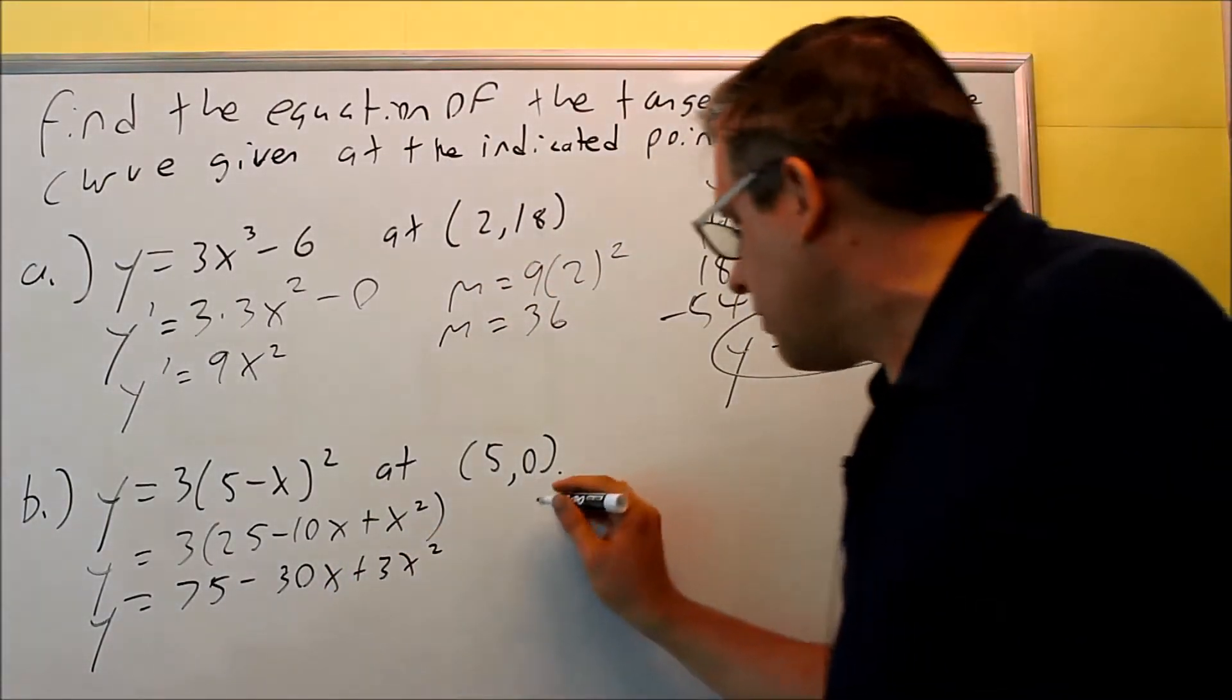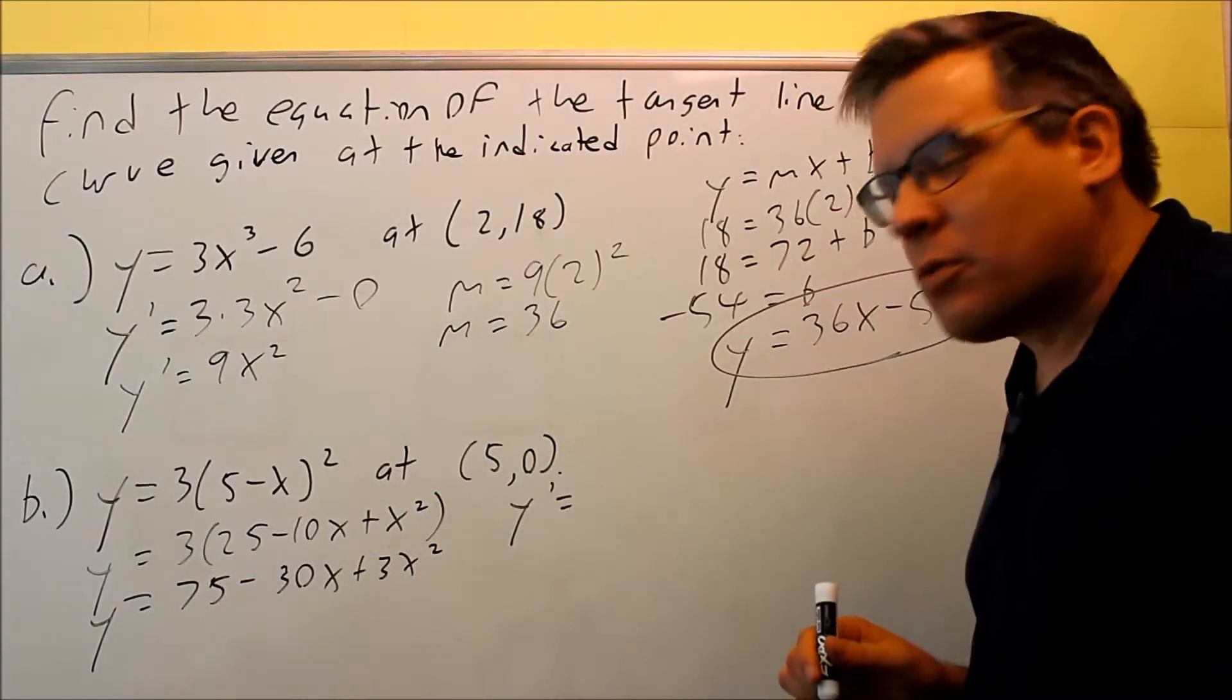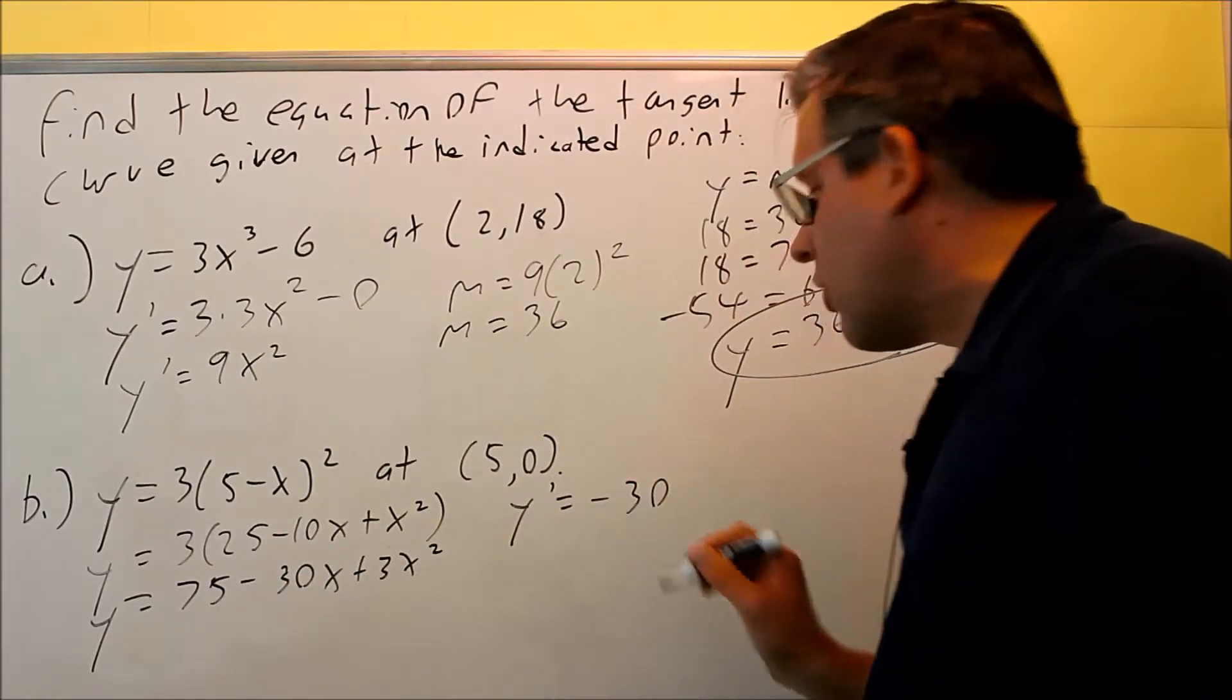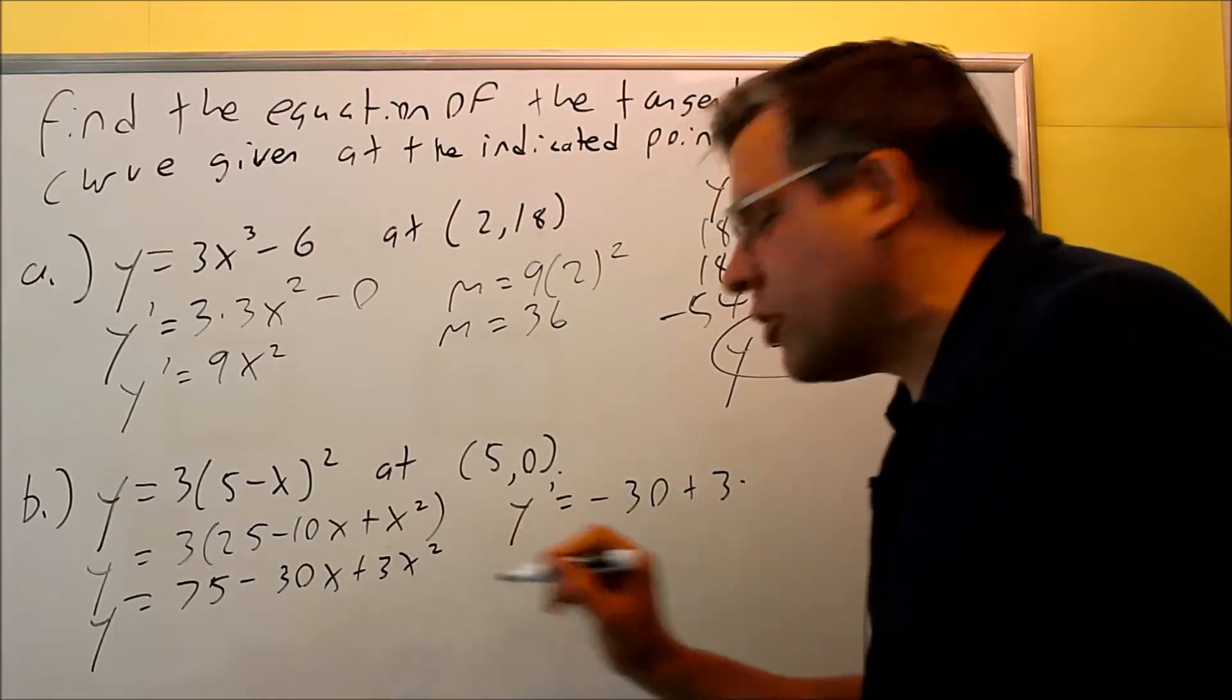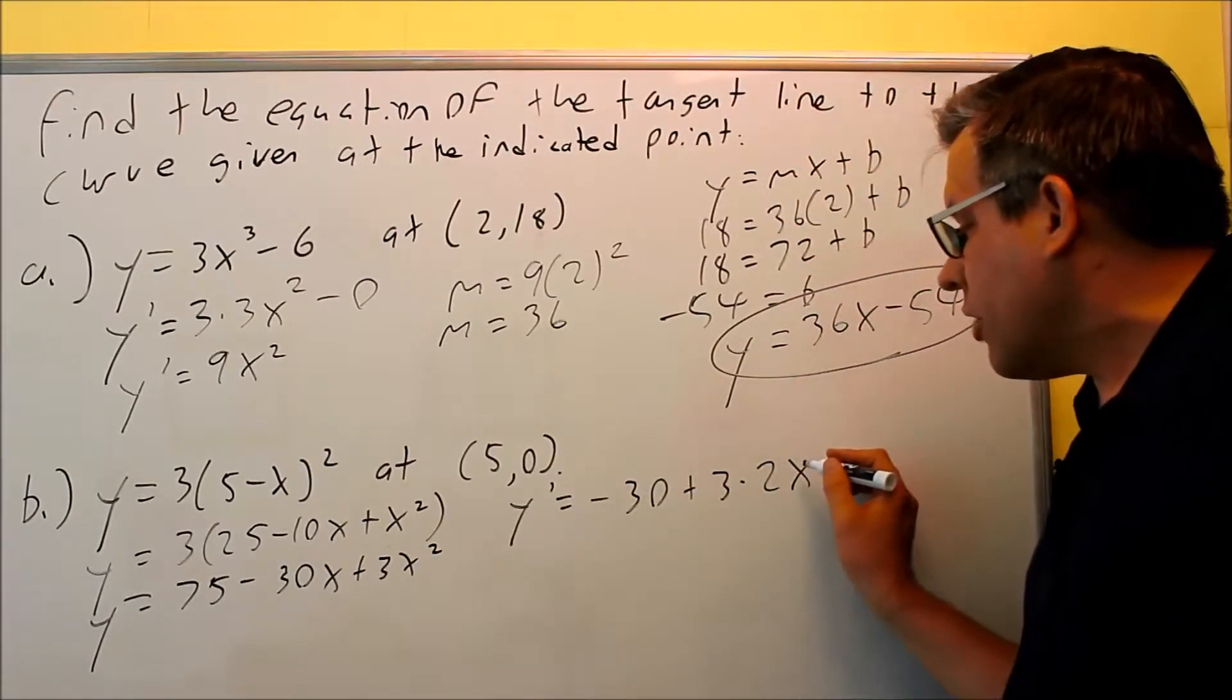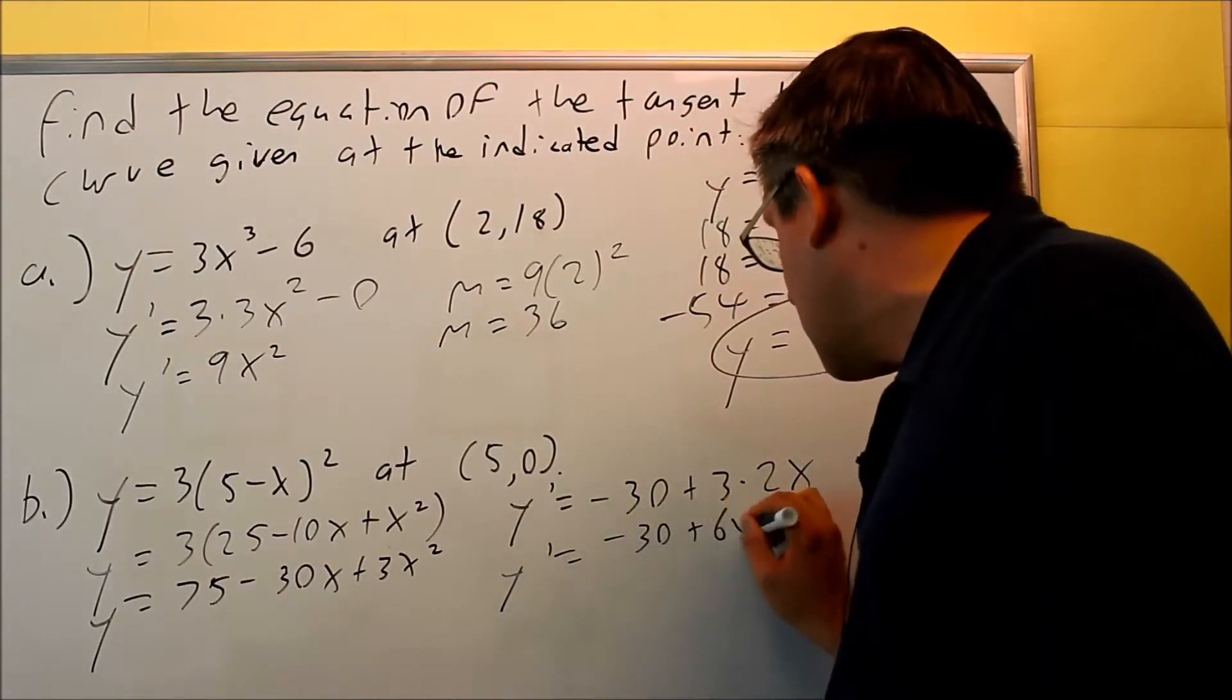And then we're going to apply the derivative. So y prime, we'll apply that to each of these terms separately. Derivative of 75 is 0. This, we have a constant times x, so you're just going to get negative 30. For this one, I have a 3 and we're going to multiply it by the derivative of x squared. I have a 2, comes down in front, and then subtract 1 and you get 2x. So y prime is going to be negative 30 plus 6x.